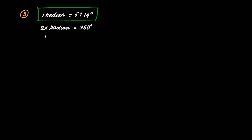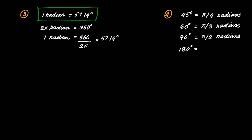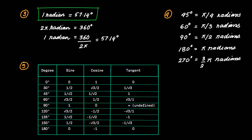Third, 1 radian equals 360°/2π equals 57.14 degrees. Fourth, remember the radian equivalents of common angles: 45° = π/4, 60° = π/3, 90° = π/2, 180° = π, and 270° = 3π/2 radians. Fifth, be fully familiar with common trigonometric functions — sine, cosine, and tangent — and remember their values for common angles like 45°, 60°, and 90°. For example, sin 60° = √3/2, and cos 45° = 1/√2.